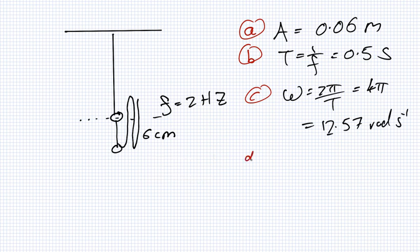Part D, what is the maximum acceleration? So A equals minus ω² X or S, whichever you prefer. So X is the distance from the origin. We don't care too much about the sign because I'm looking for the maximum.